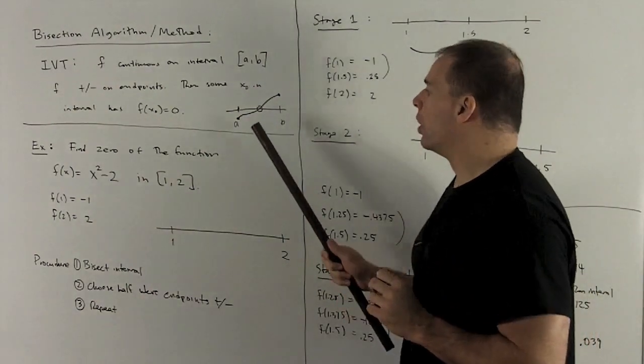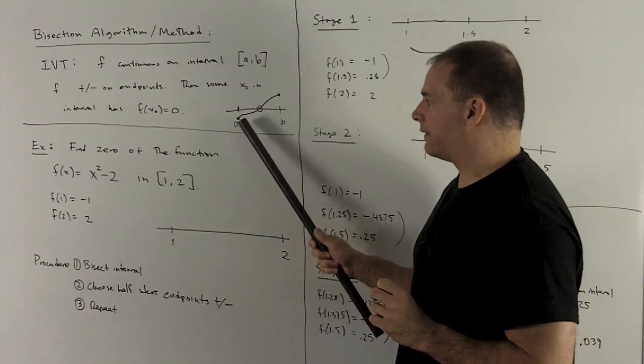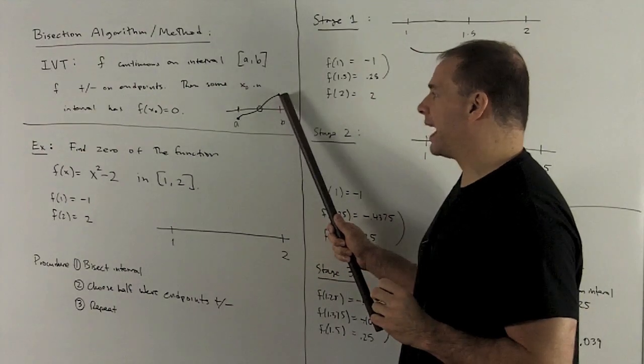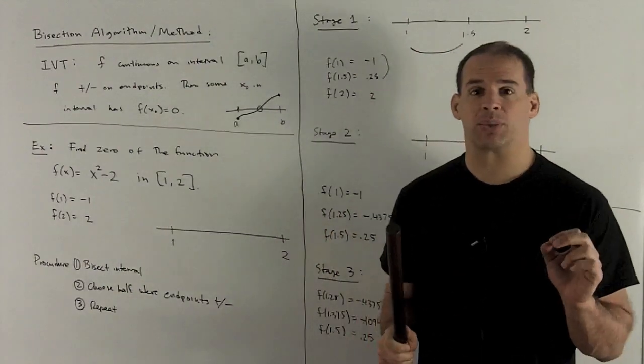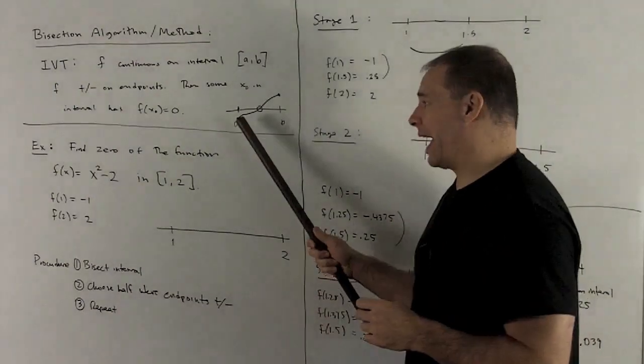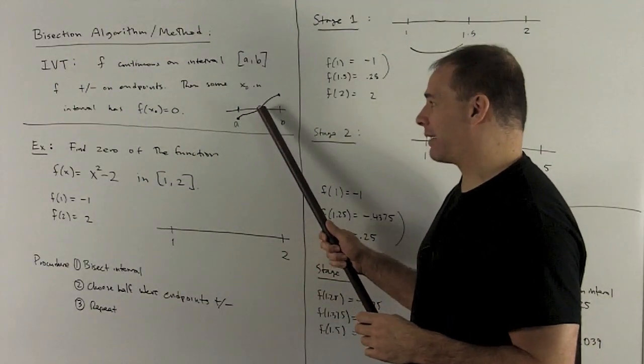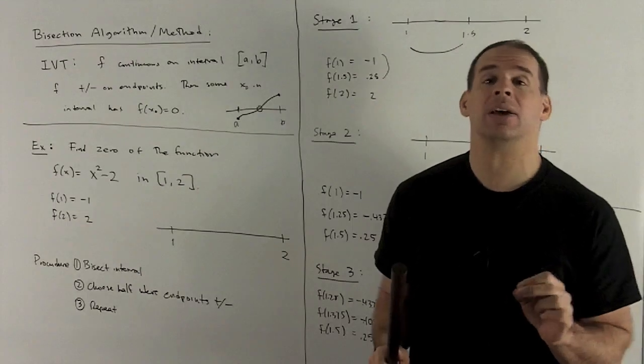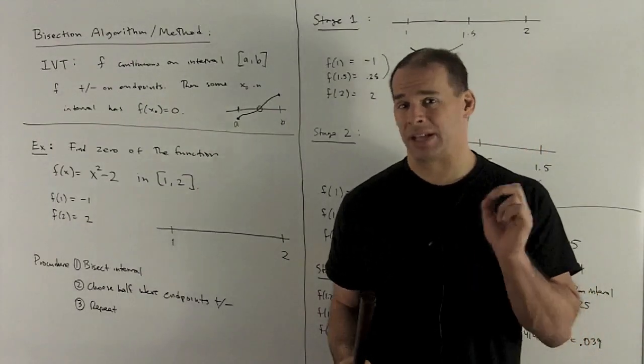So the picture for this is, here a is going to have a negative value, here b is a positive value. Since it's continuous, we have to be able to get from a to b without picking up the pencil. But to get there, I have to cross the x-axis. Where I cross the x-axis, that's going to be our 0.